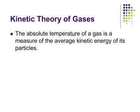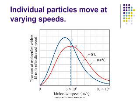The absolute temperature of a gas — we're talking about Kelvin — is a measure of the average kinetic energy of its particles. So as the temperature increases, the average kinetic energy of the particles increases; we have a direct relationship. This does not mean that all of the particles are moving at the same speed. Quite the opposite — the individual particles move at varying speeds. We actually have a Gaussian distribution, a Bell curve.